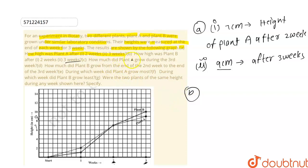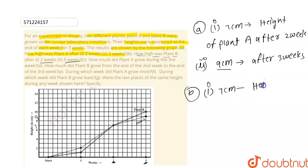Now for Part B, we have to find how high was Plant B after two weeks. Plant B is represented by the dark line. After two weeks, the height of Plant B is seven centimeters.